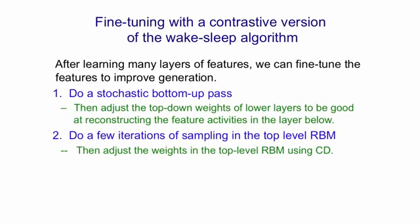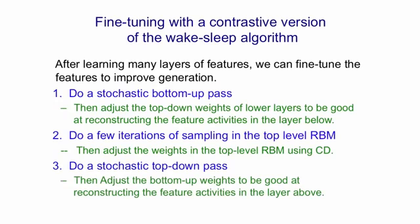The third stage: we take the visible units of that top-level RBM — its lower layer of units — and starting there, we do a top-down stochastic pass using the directed lower connections, which are just a sigmoid belief net. Having generated some data from that sigmoid belief net, we adjust the bottom-up weights to be good at reconstructing the feature activities in the layer above. That's just the sleep phase of the wake-sleep algorithm.